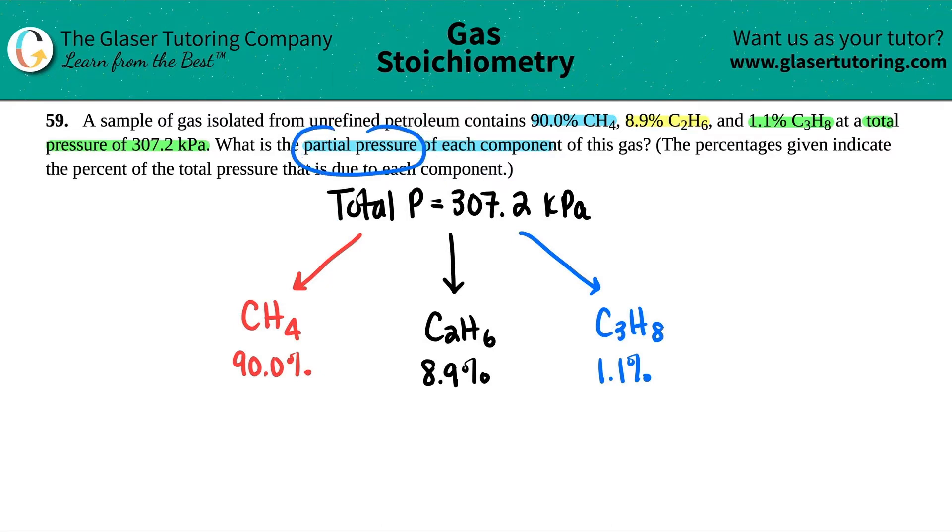When they say partial pressure, this is a chemistry term for just saying the pressure of an individual compound. So we would always say the partial pressure of CH4, that just means you're finding the pressure for just CH4, the partial pressure for C2H6, or the partial pressure of C3H8. But this is basically based off of percentages, and a general percentage is always percent equals something divided by something times 100. And remember, it's always a part divided by a whole.